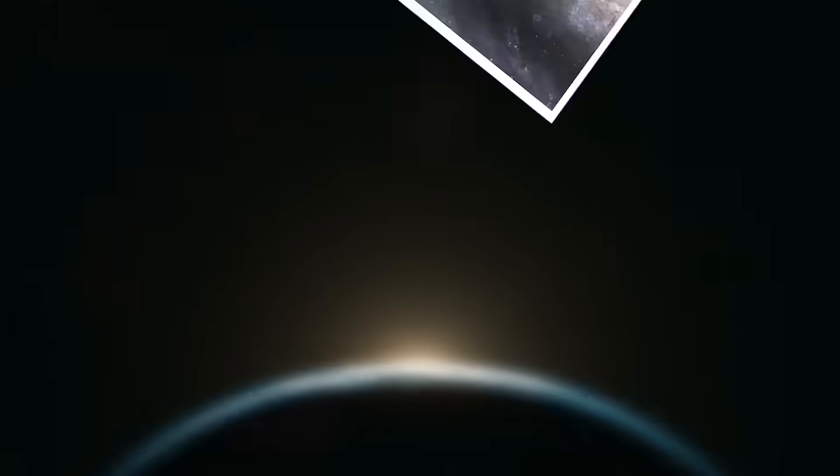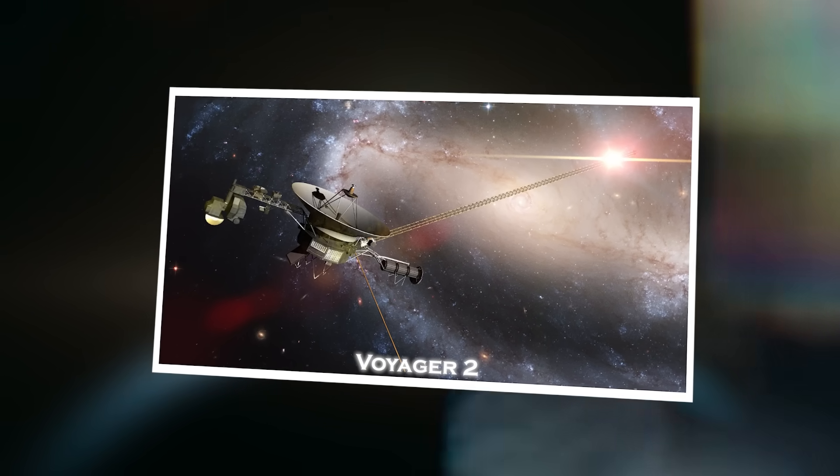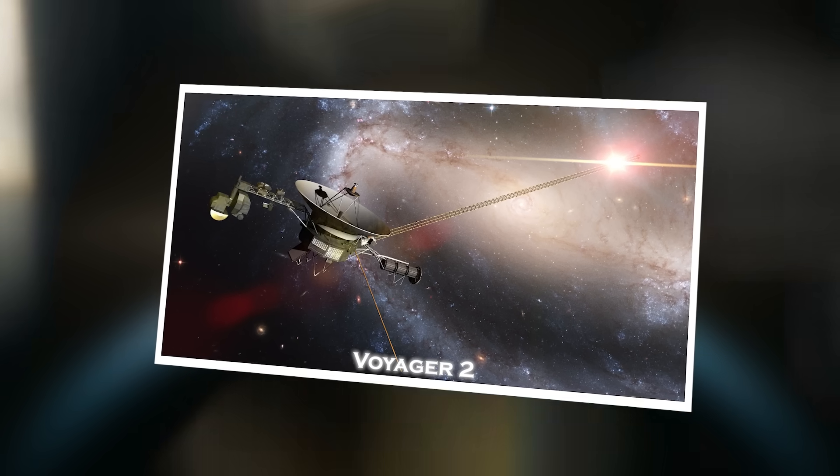While its twin, Voyager 2, followed a slightly different route, Voyager 1 began to venture upward, out of the plane of the solar system and into the great unknown.